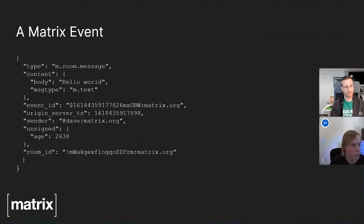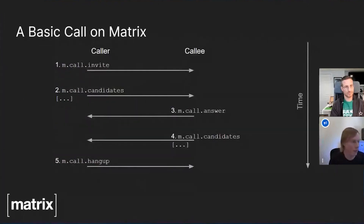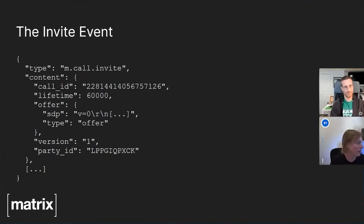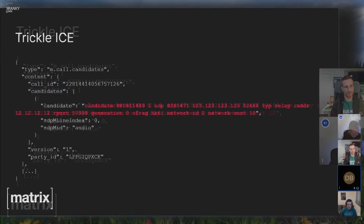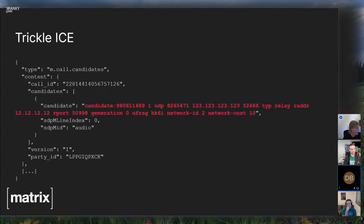What about calls? They look like this: you first send an m.call.invite, and if you're familiar with WebRTC you'll know about trickle ICE, where you can send your candidates as they're ready so you don't have to wait for all candidates to be gathered and your call connects faster. Matrix supports that right out of the box with the m.call.candidates event. The invite event has the SDP straight from your WebRTC stack — type offer — plus a call ID. The candidates event contains the candidate, in this case a relay candidate.